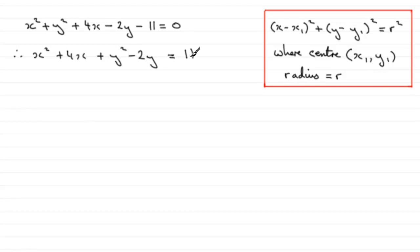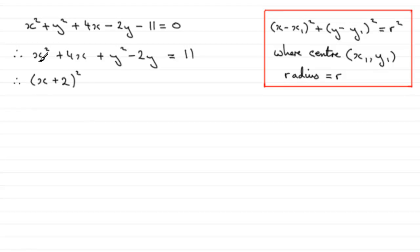So we've got x squared plus 4x, and then we've got y squared minus 2y, and then we add 11 to both sides so it equals 11. For x squared plus 4x, we complete the square: it's going to be (x + 2) squared. If you expand this, you get x squared plus 4x plus 4, but there is no 4 here so we subtract it, giving us x squared plus 4x.